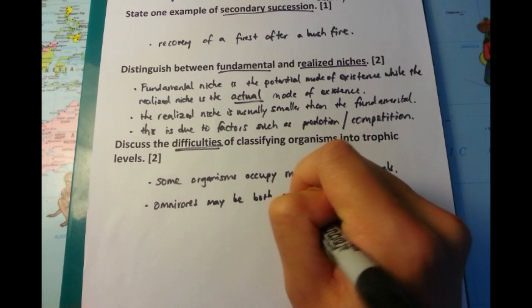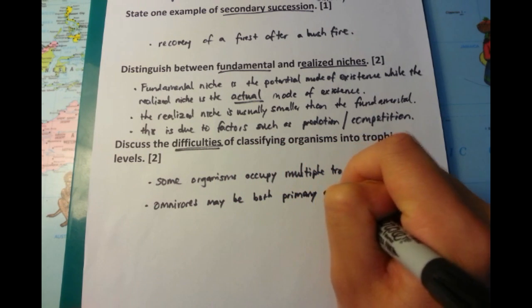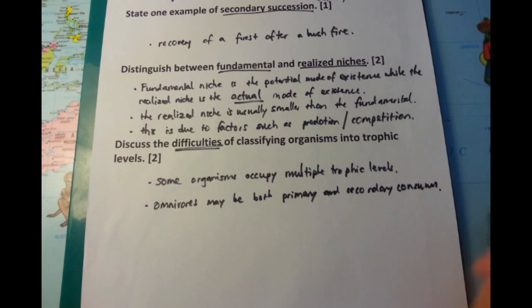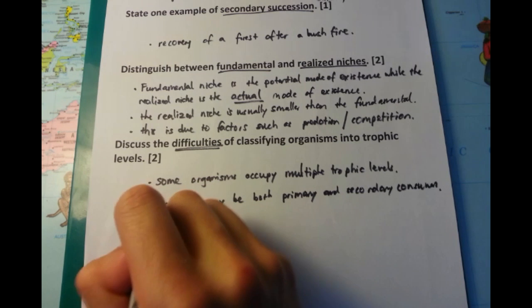The second point I'm going to talk about is a given example of that. So, for example, omnivores may be both primary consumers because they eat producers, but it also might be secondary consumers as well.